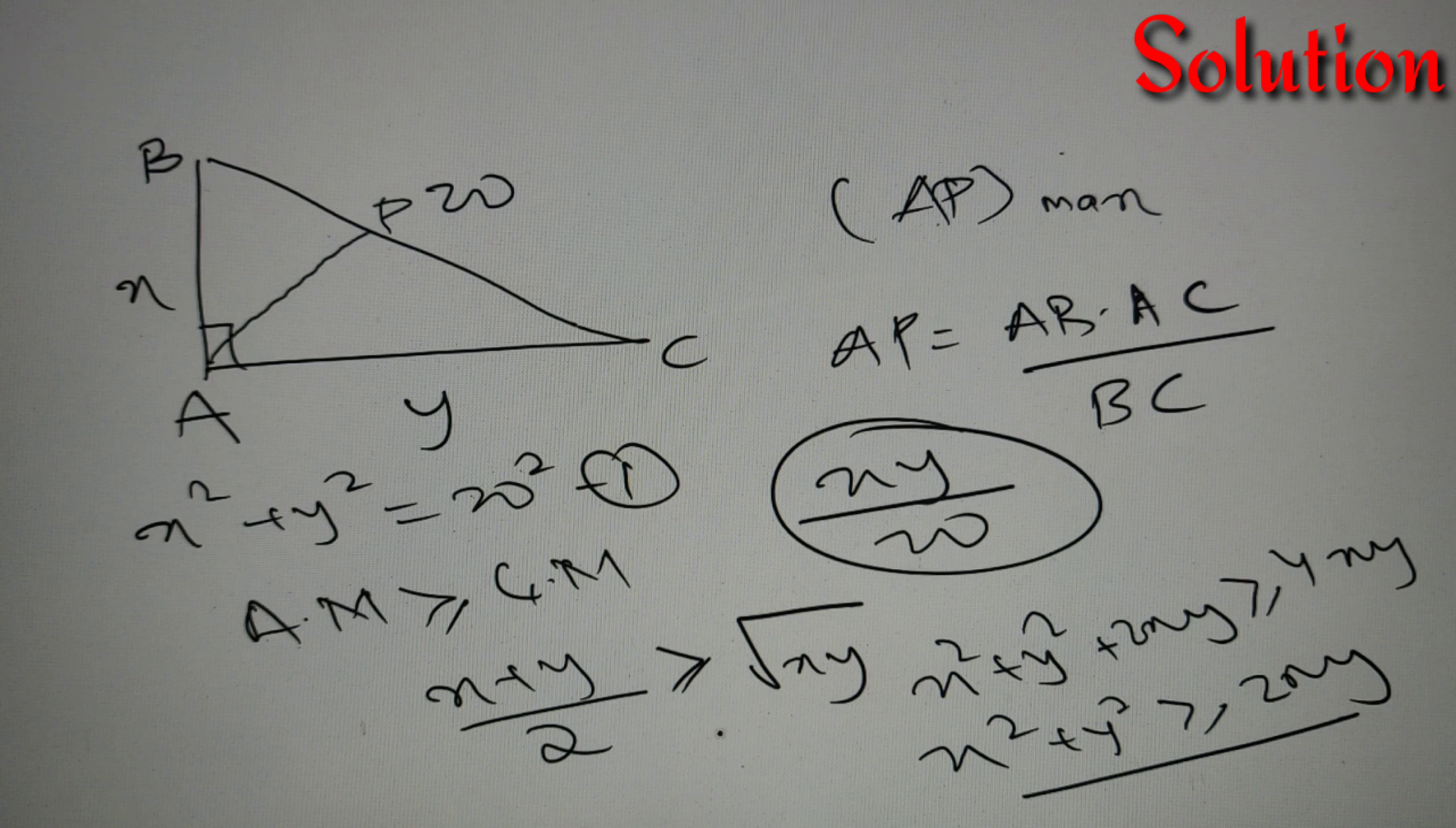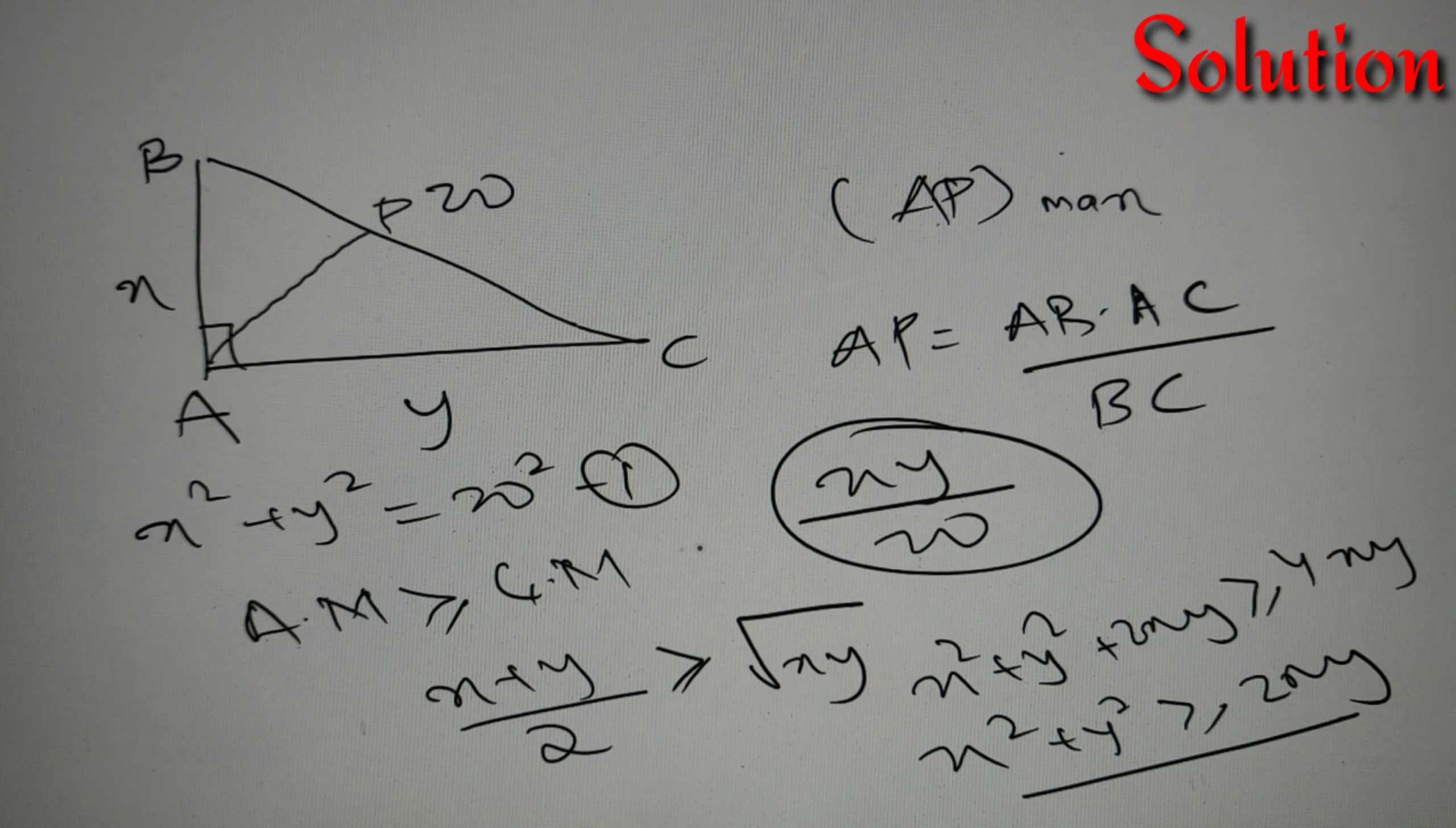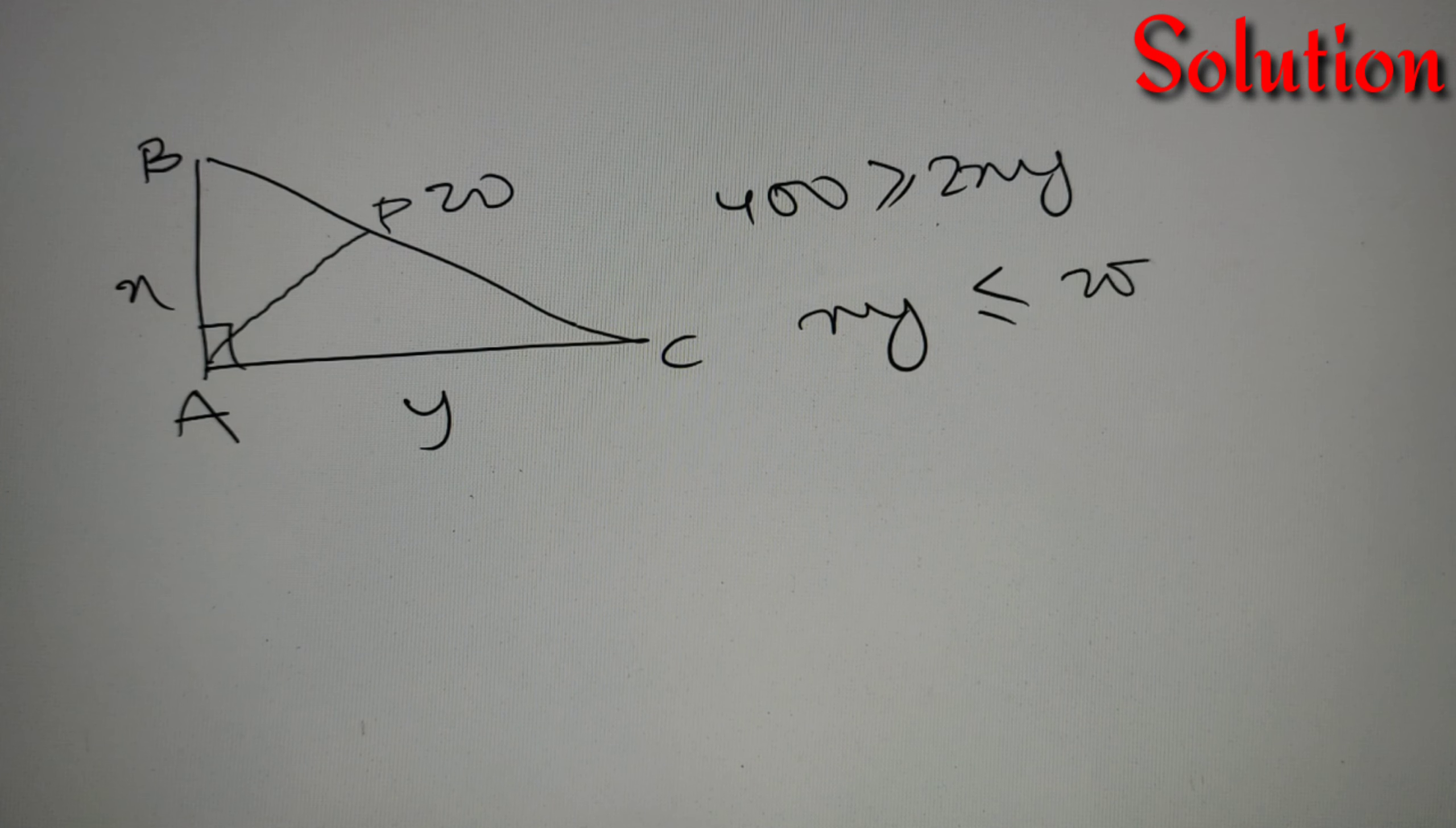On combining these two equations, we'll get 400 is always greater than or equal to 2XY. Combining both equations, we get that XY is always less than or equal to 200, so the maximum value of XY will happen at XY equals 200.